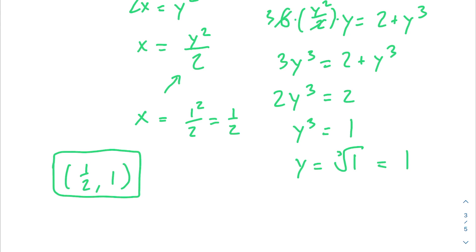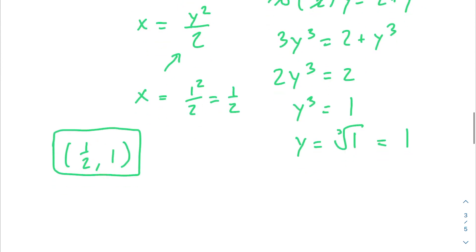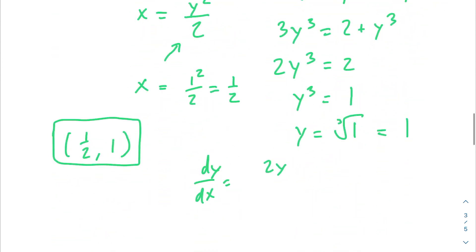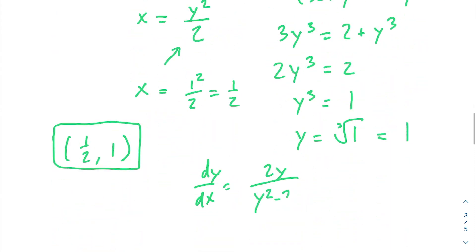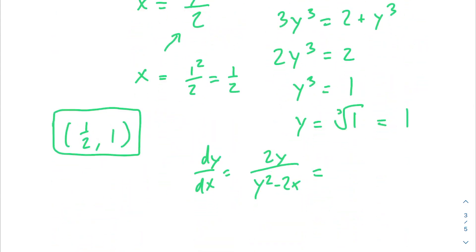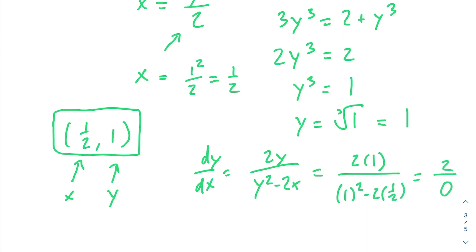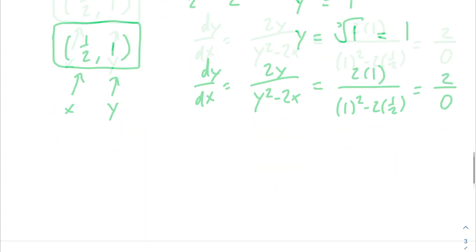To verify, plug x = 1/2 and y = 1 into dy/dx = 2y/(y² − 2x): we get 2(1)/(1² − 2·(1/2)) = 2/0, which is undefined. This confirms the tangent line is vertical at the point (1/2, 1).